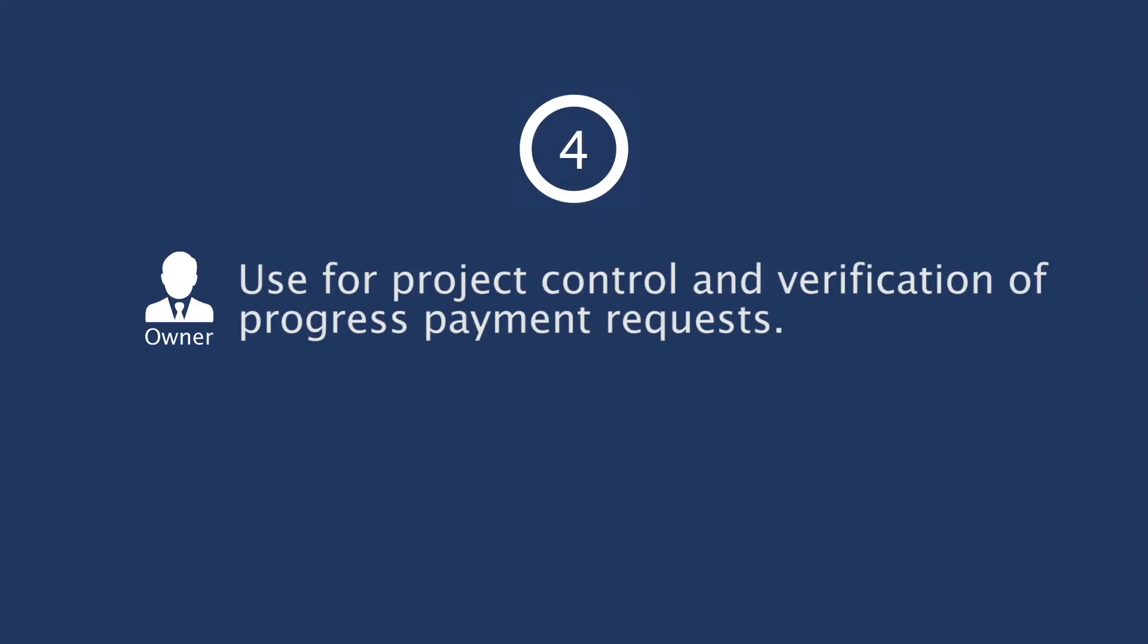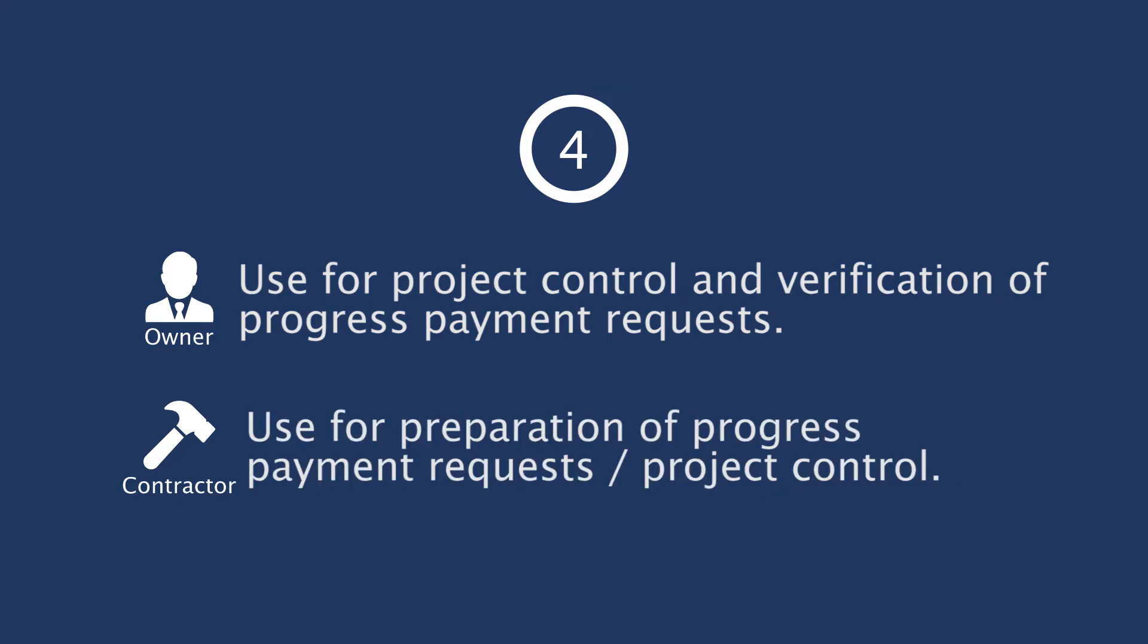We'll go back to why we schedule projects. We talked about reason number three, the cash flow diagram. Now we go to reason number four: use for project control and verification of progress payment requests. We just talked about progress payments, and there is a cycle in the construction industry, most likely on a monthly basis, that the contractor submits pay requests to the owner and the owner has to verify all the numbers in it.